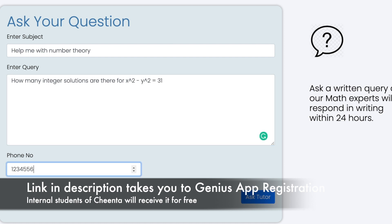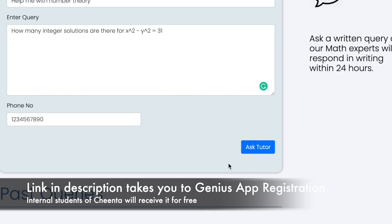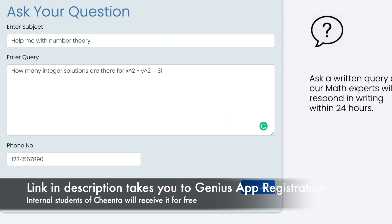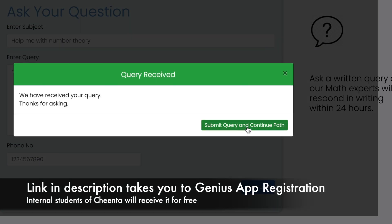Maybe ask: how many integer solutions are there for x² - y² = 31567890, whatever your number is, and click on ask tutor. So let's click on ask tutor and submit query and continue with it.